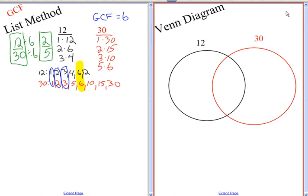Hello everyone, this is the second screencast for GCF. It is how to find the greatest common factor using a Venn diagram. The Venn diagram is usually used hand in hand with the list method. So I'm going to look back to my previous screencast and the list method that I did.